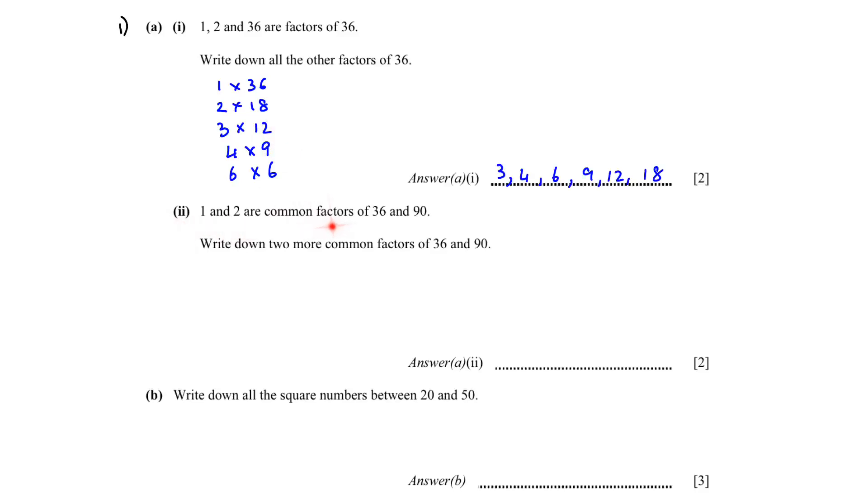1 and 2 are common factors of 36 and 90. Write down two more common factors of 36 and 90. If you multiply 6 by 15 you will get 90, and 9 by 10 will give you 90. So the two common factors of 36 and 90 are 6 and 9.